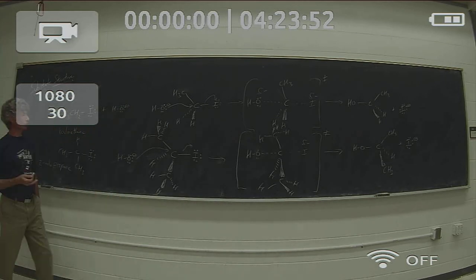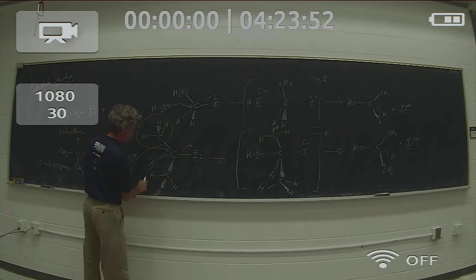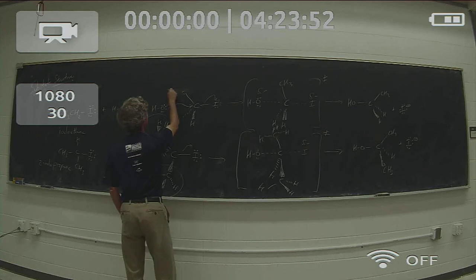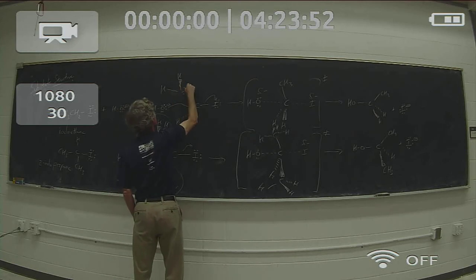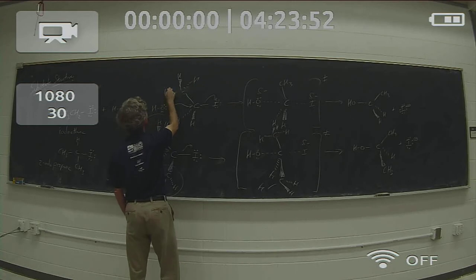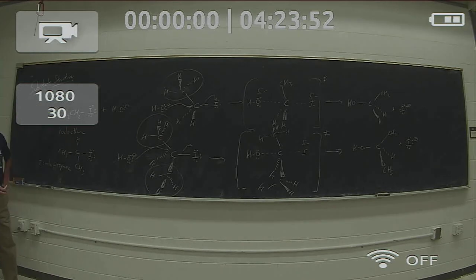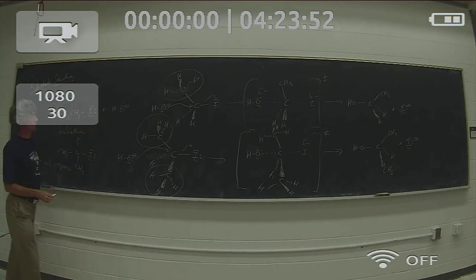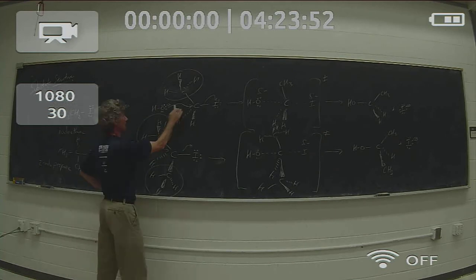What we have to consider is how sterically large the methyl groups are relative to a hydrogen. In the primary case with one alkyl group, the hydroxide is going to be blocked to some extent from attacking from that side, but the two hydrogens put up very little resistance for it coming in and attacking from the other side.